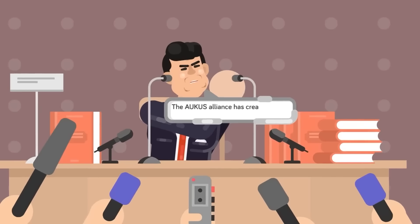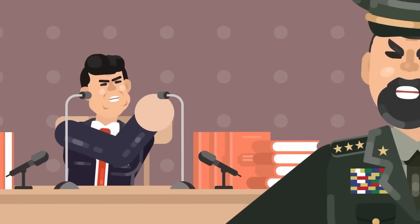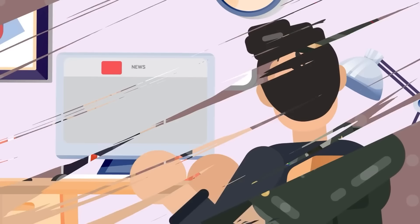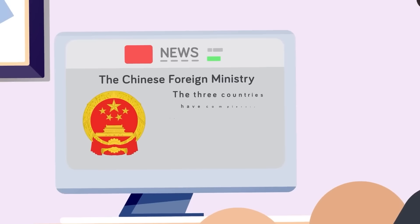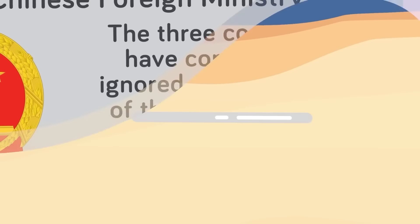Beijing has also claimed that the AUKUS alliance has created a Cold War mentality and zero-sum games, where China will have to strengthen its own position and respond with aggressive tactics to maintain the status quo. After the speech by the three leaders of AUKUS, the Chinese foreign ministry released a statement. The three countries have completely ignored the concerns of the international community and gone further down a wrong and dangerous road.